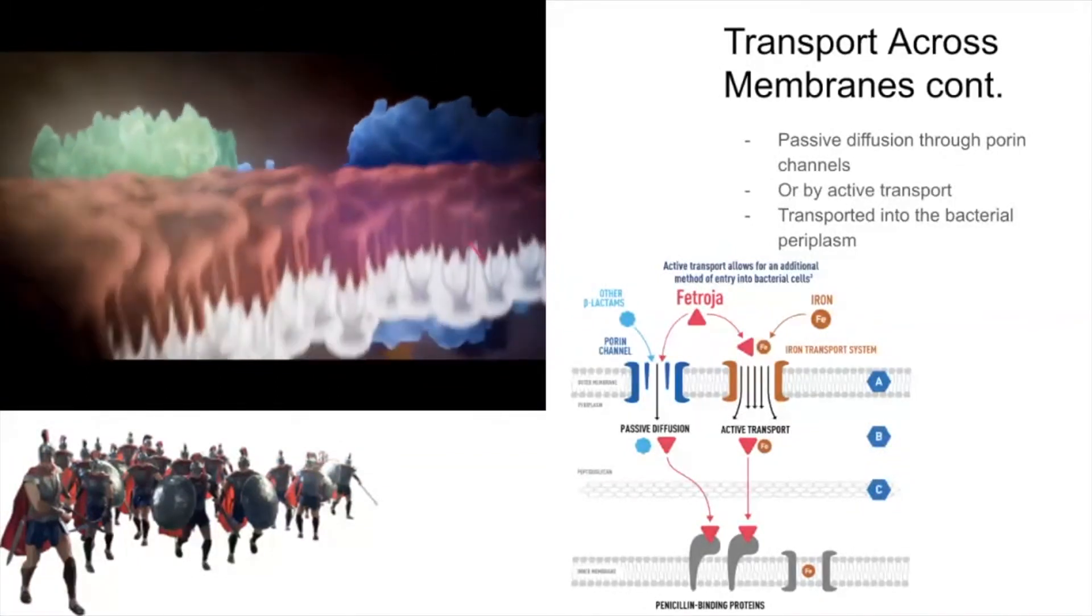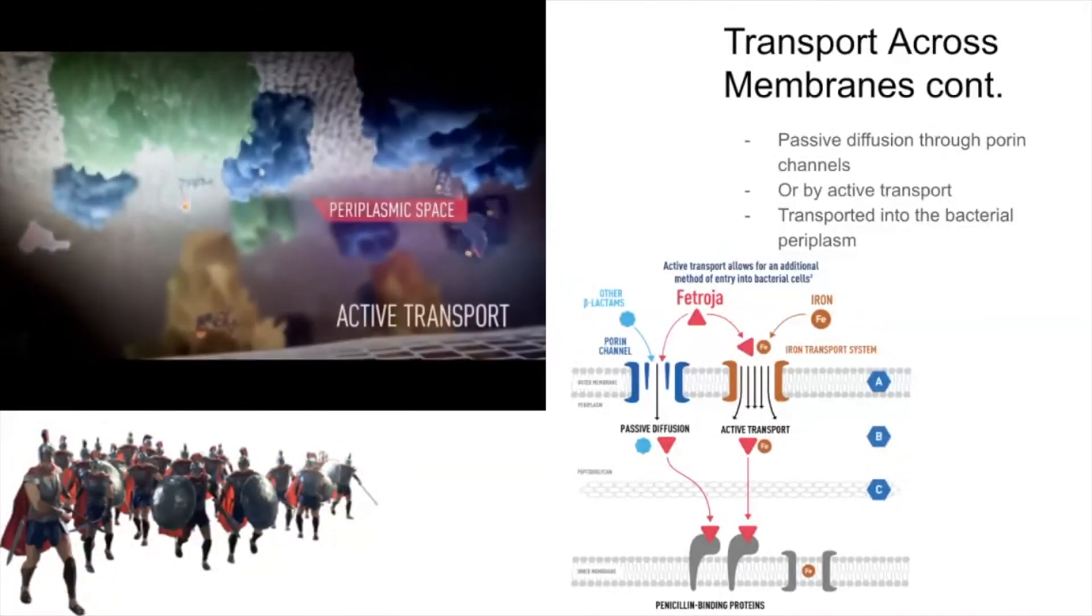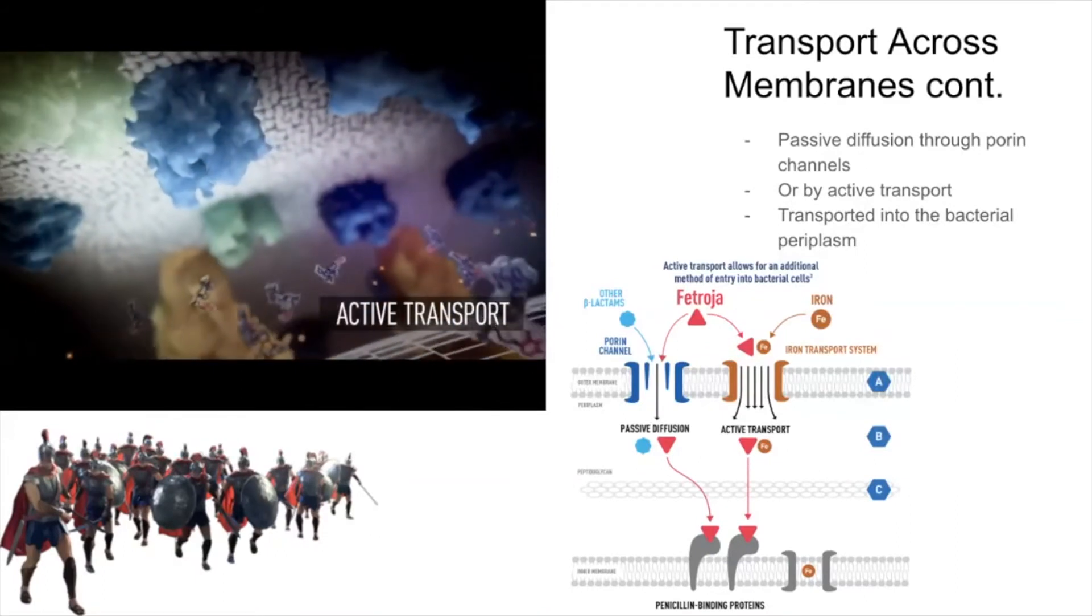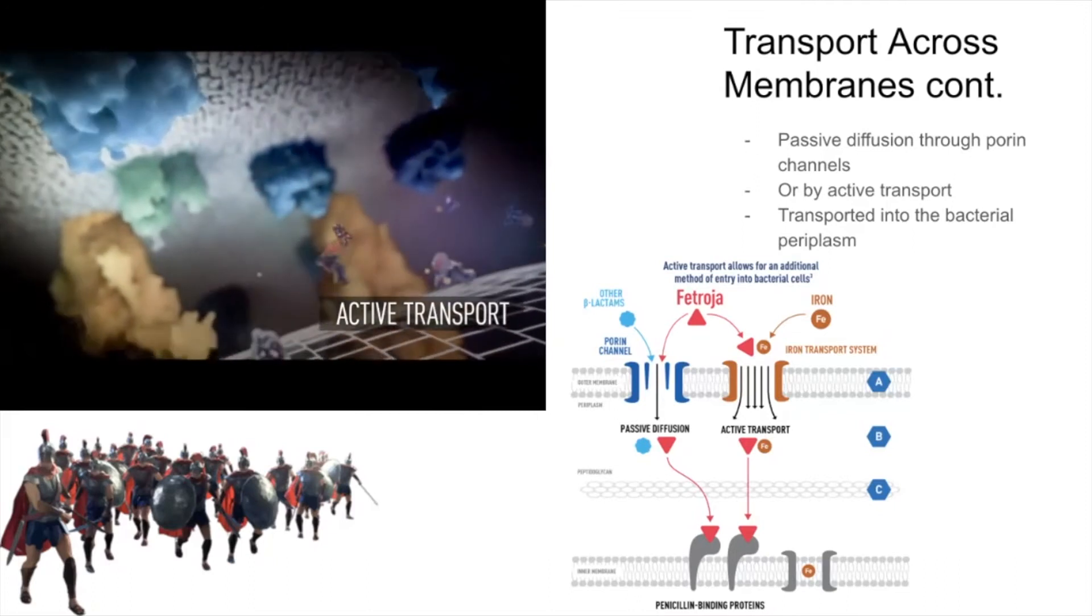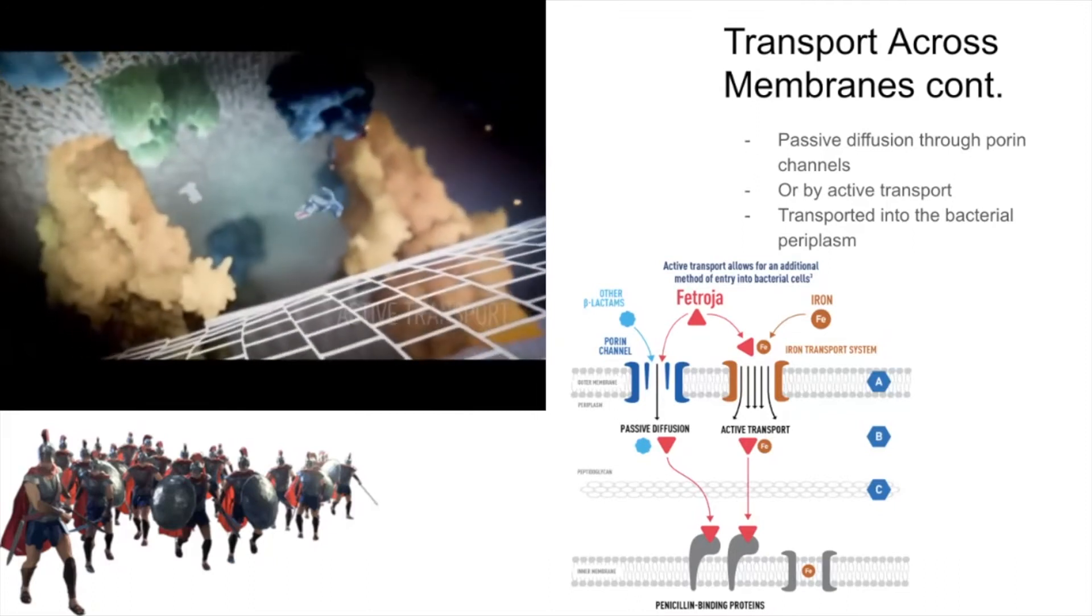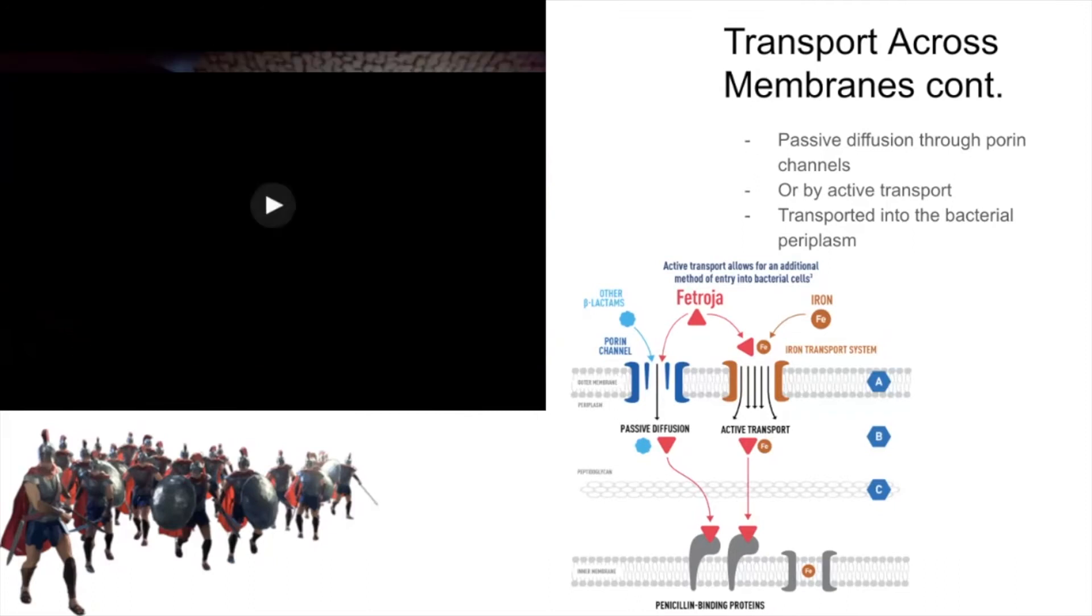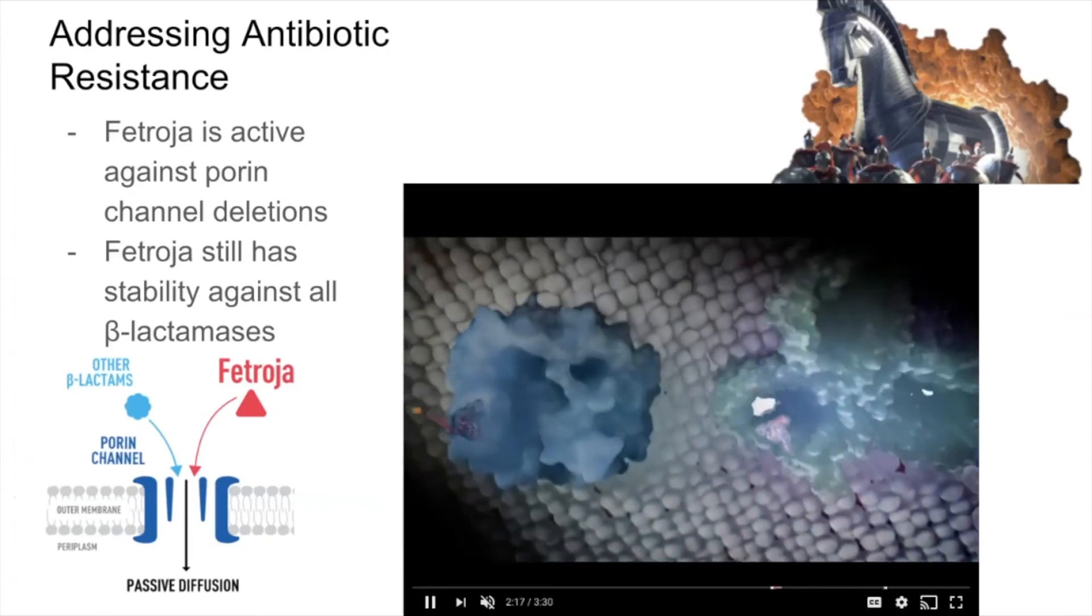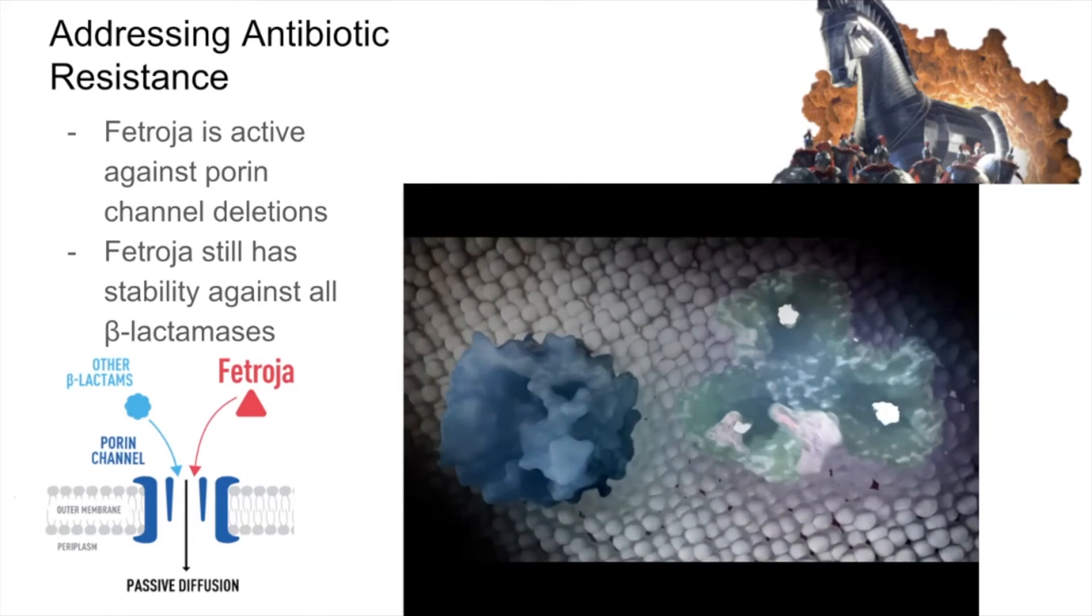Active transport through the bacterial iron uptake system results in high levels of Fetroja due to its ability to enter through the iron transport system and passively through the porin channels.